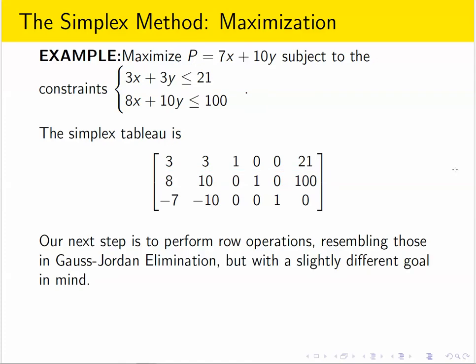We'll perform operations on the rows, like we do when we perform elimination, but with a slightly different goal in mind. So remember when we do Gauss-Jordan elimination, we try to make the left side of the matrix look like an identity matrix.